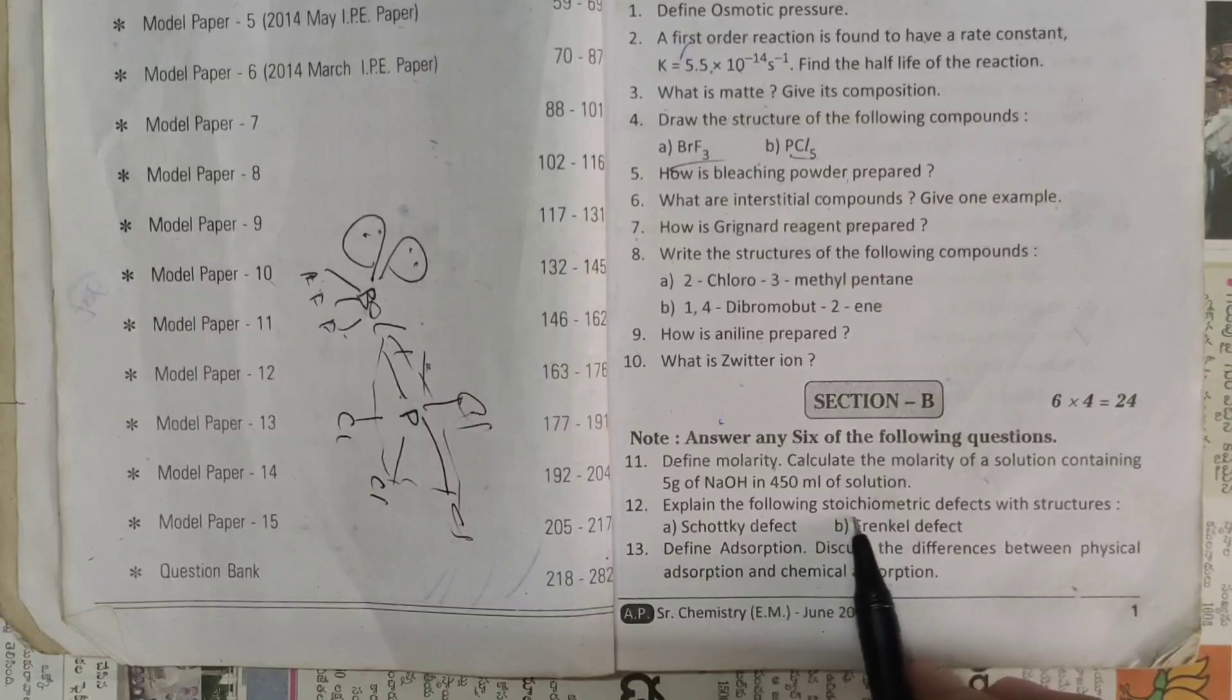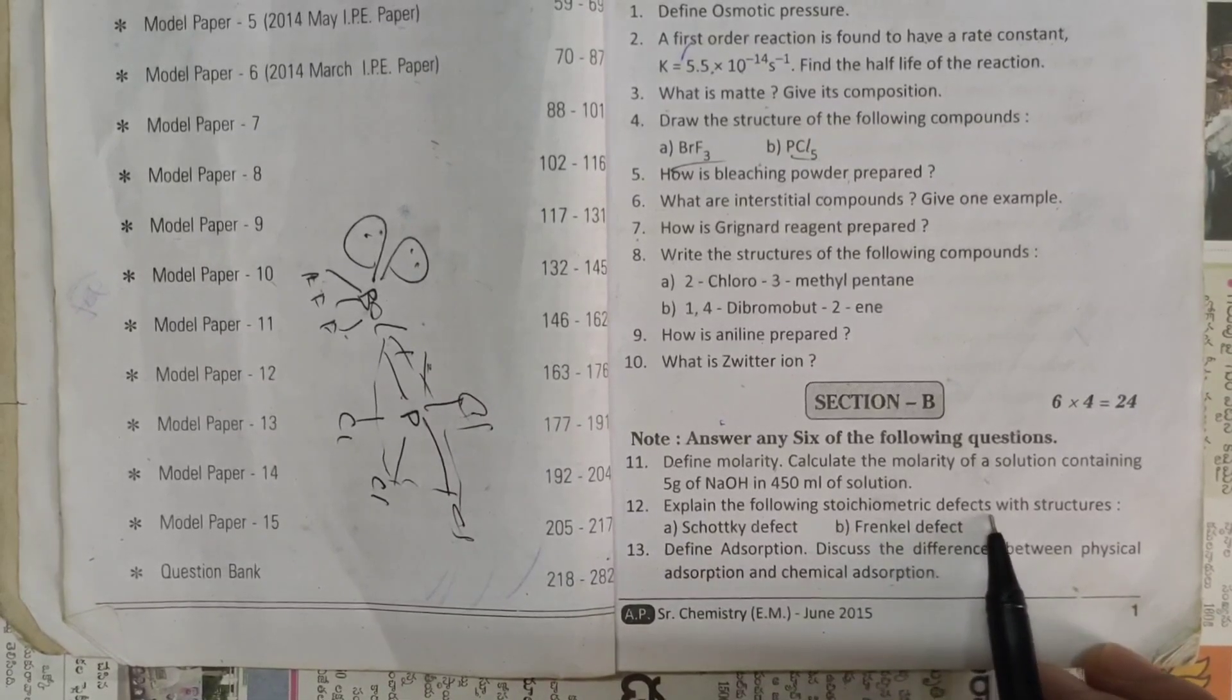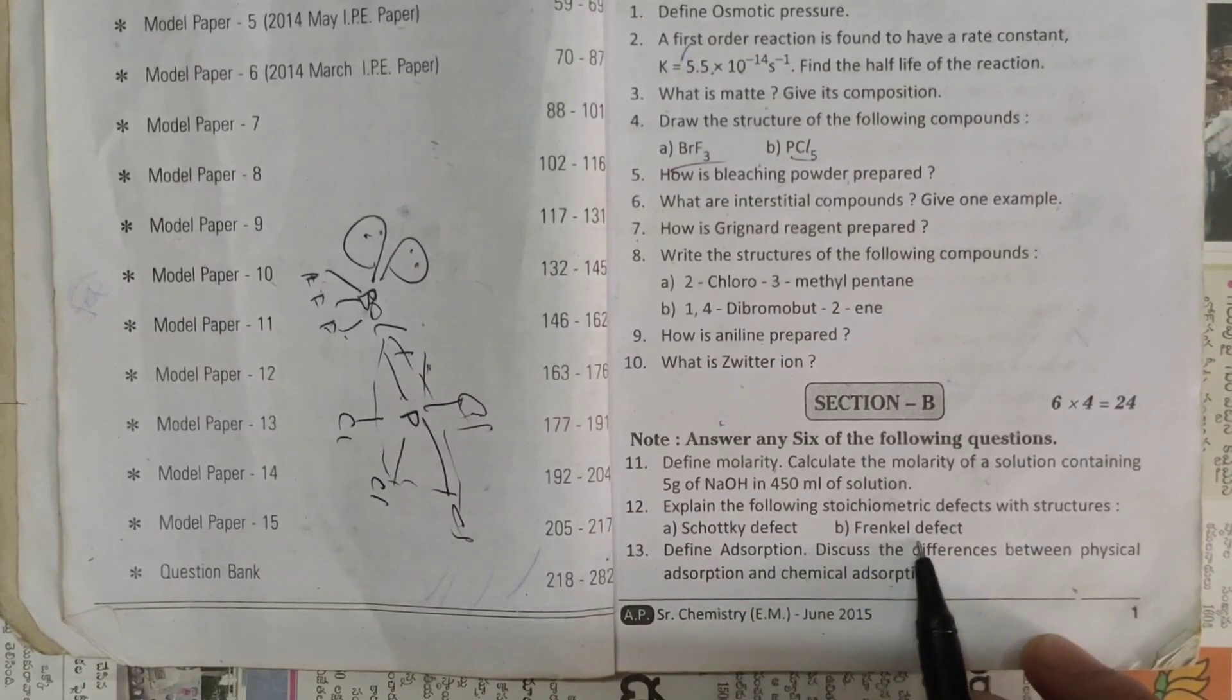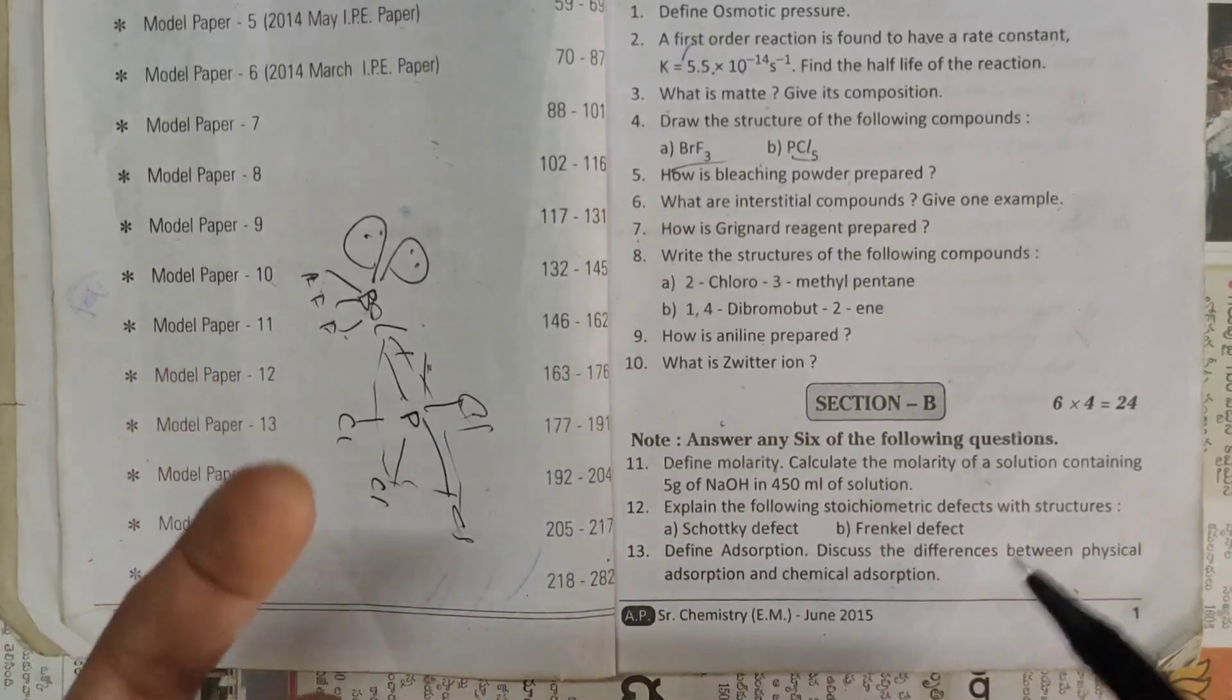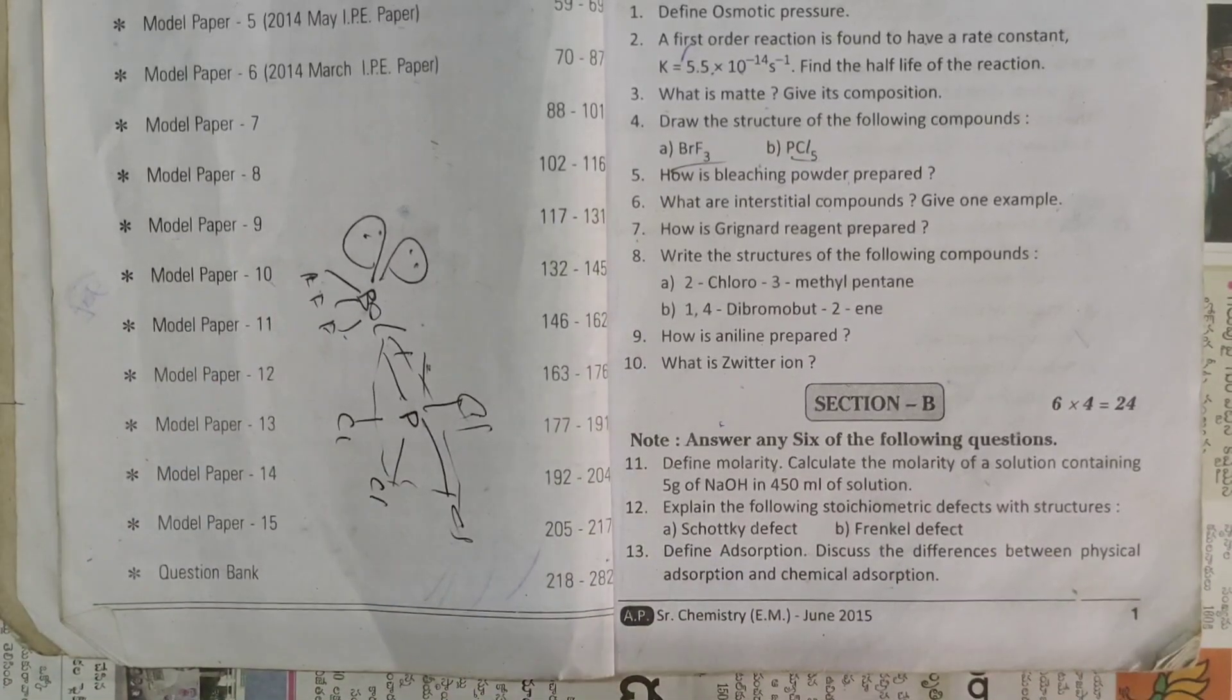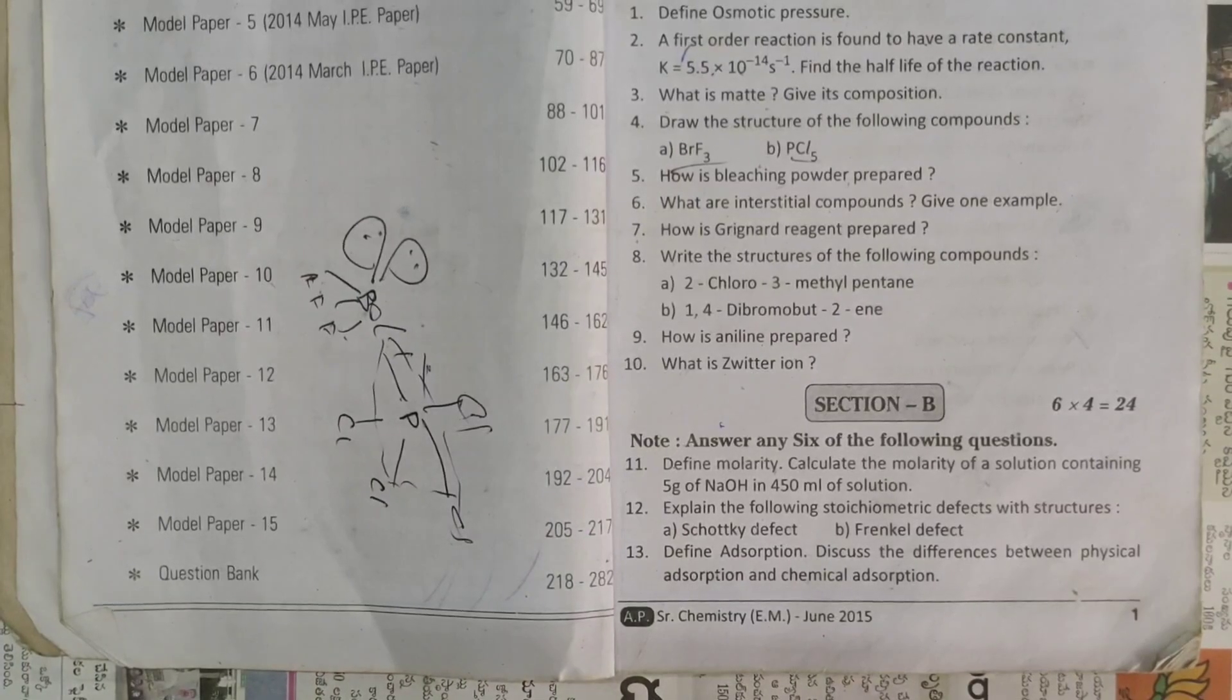And next one, explain the following stoichiometric defects with the structures: Schottky defect and Frenkel defect. So if we read two marks questions, we have a lot of time. And if we read two, at the time we have a four marks question.